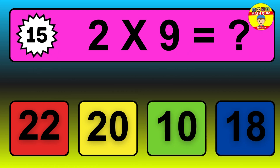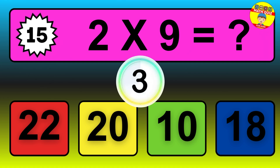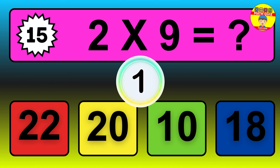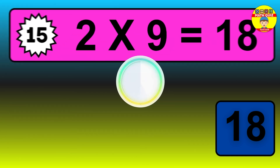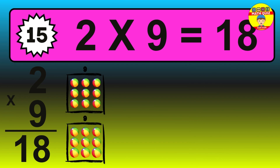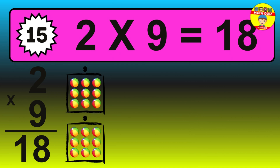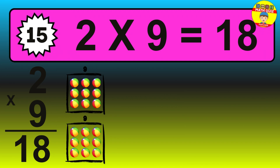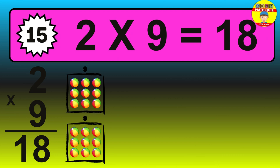Question 15. 2 times 9 equals what? The answer is 2 times 9 is 18. To calculate, we have 2 groups with 9 balls each one. So, how many balls do we have? 18 balls.